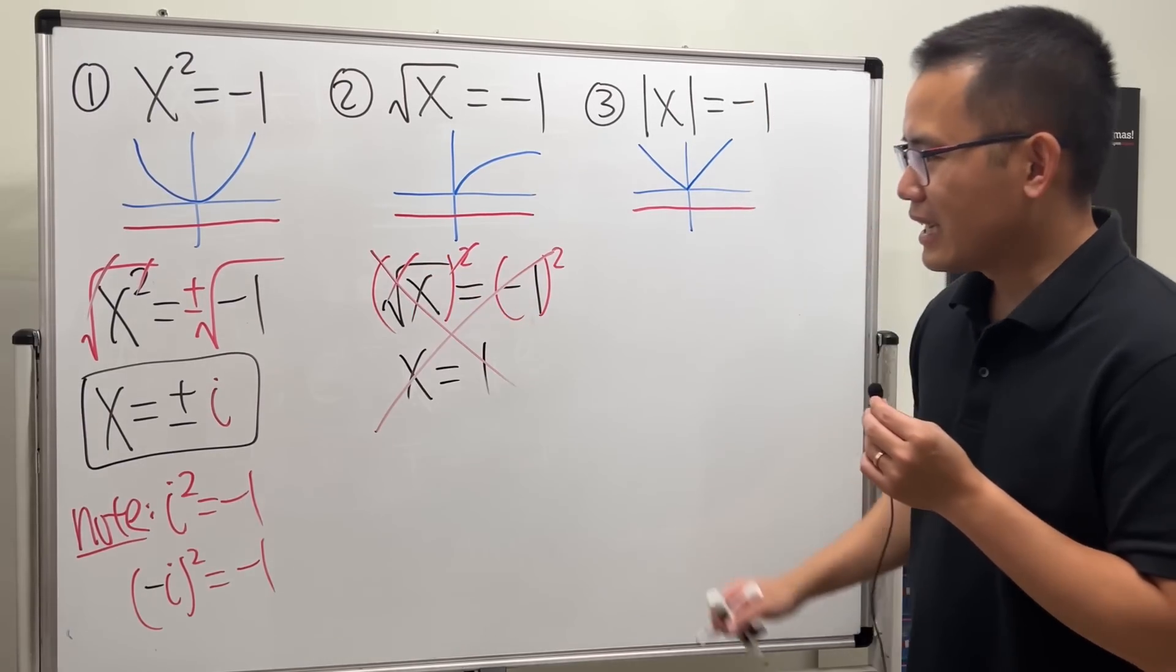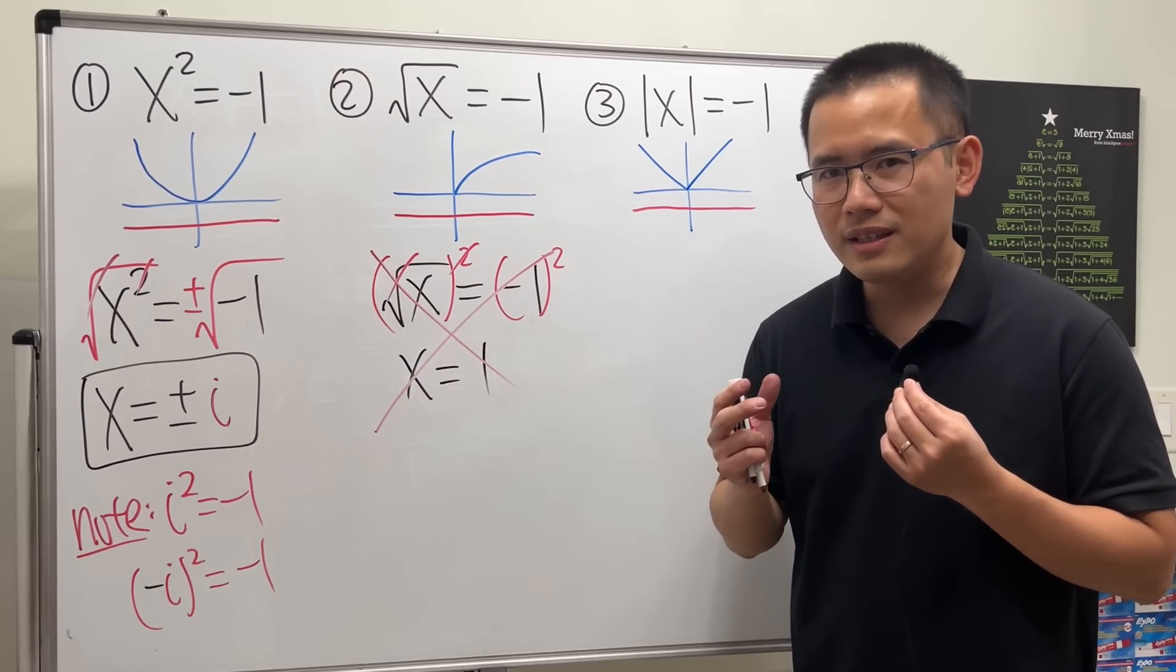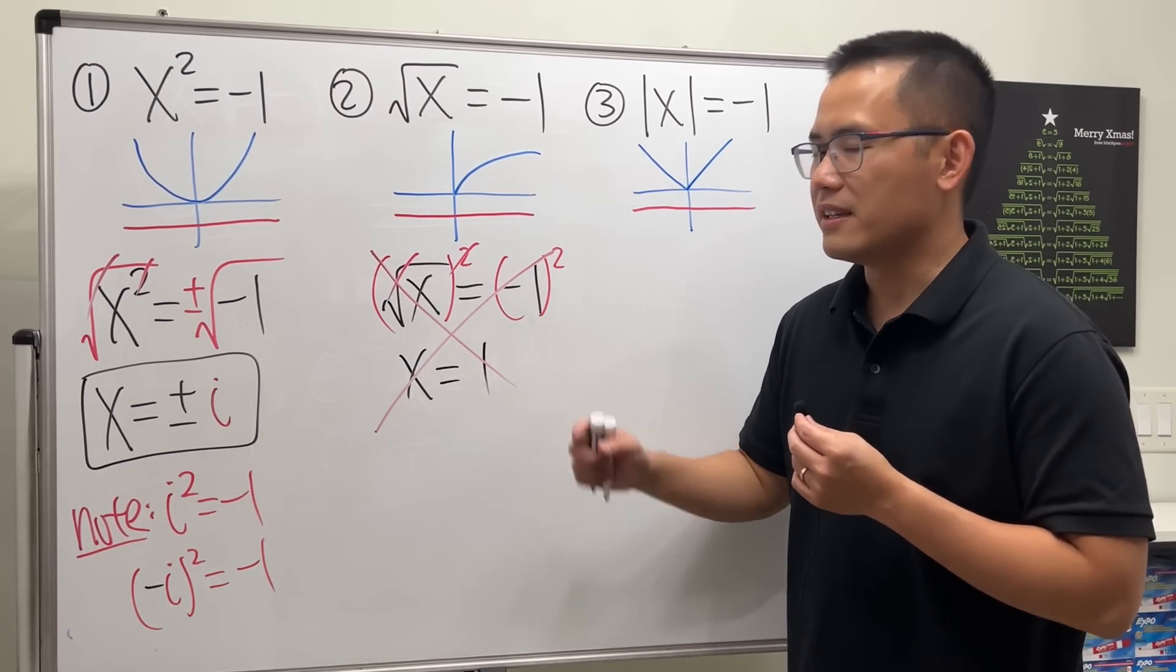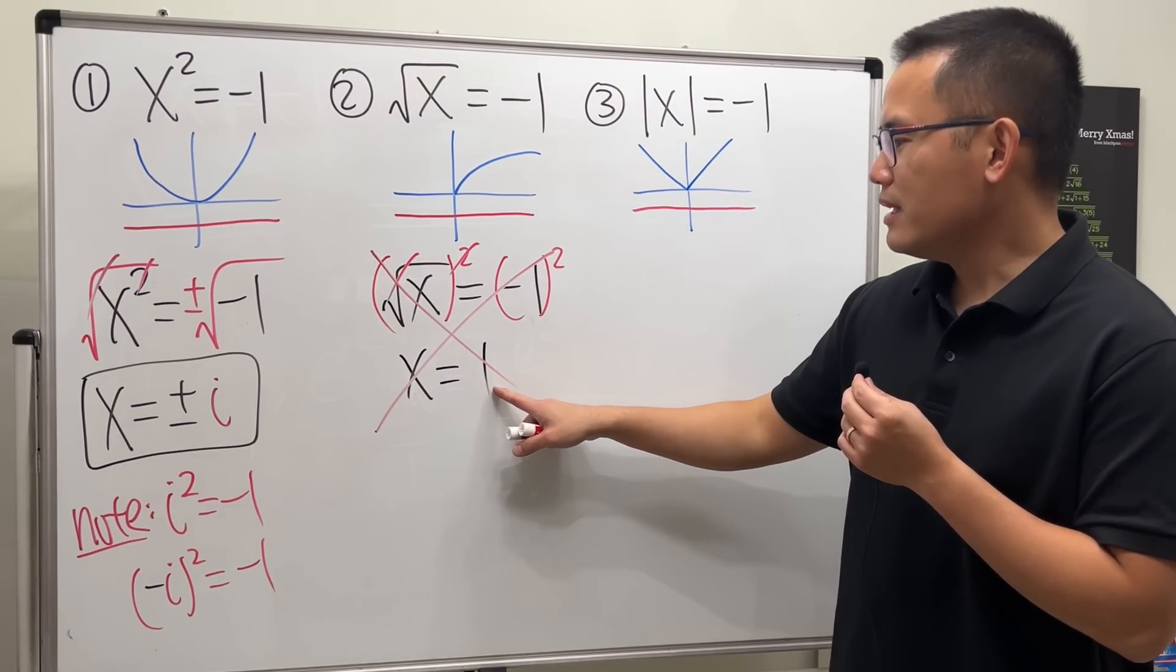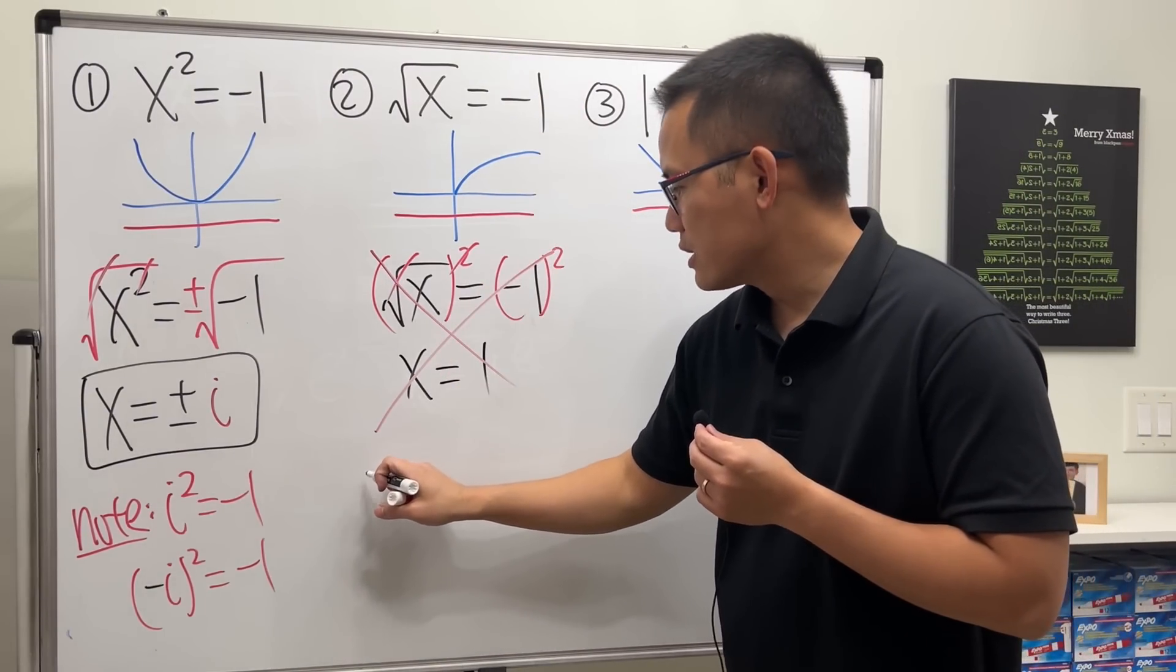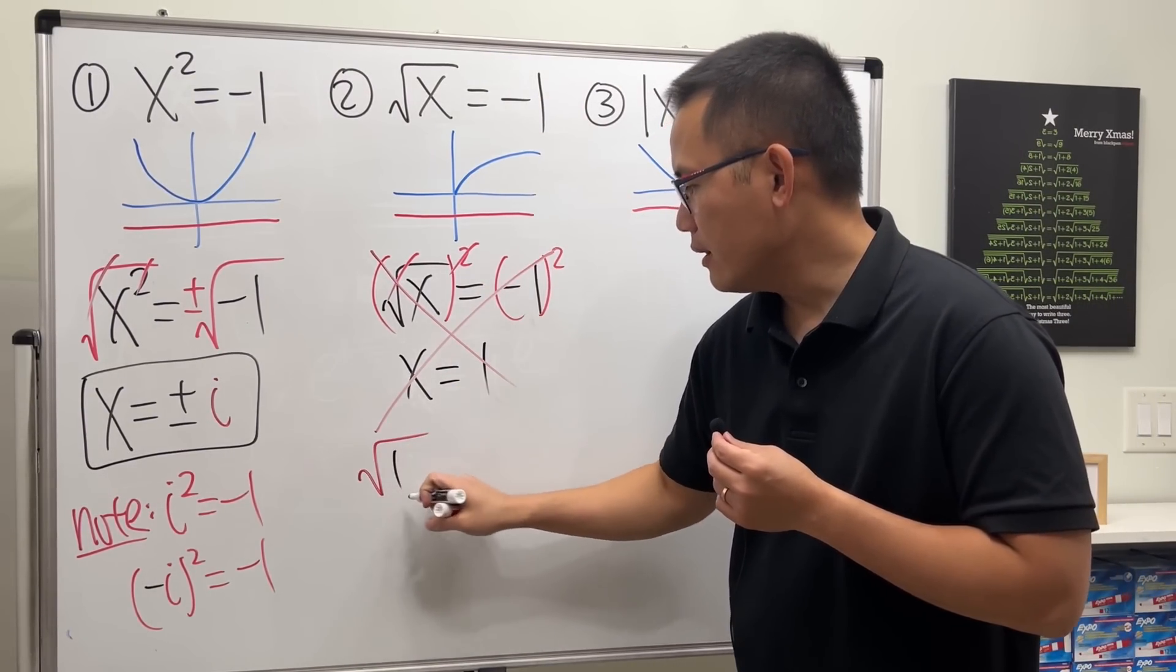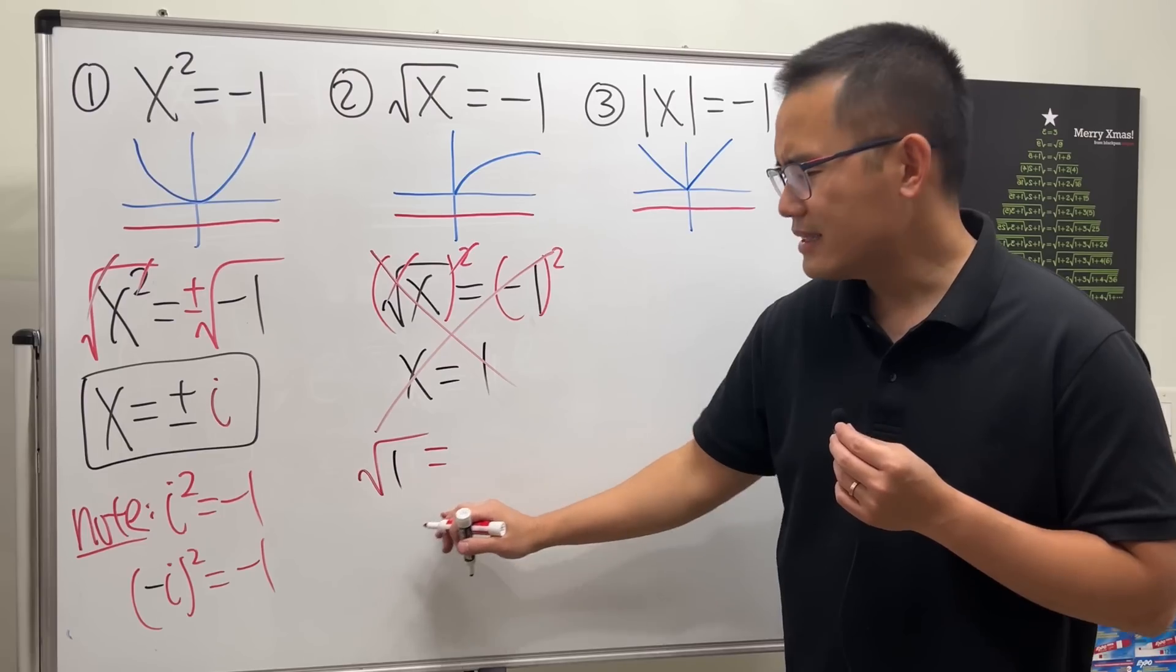But let me tell you, this right here is not the answer. This right here is an extraneous solution, meaning it's like a fake answer, meaning it doesn't work. Let's try it. If we plug in one into the original equation, we get square root of one, but if you just look at square root of one, that's just equal to one.